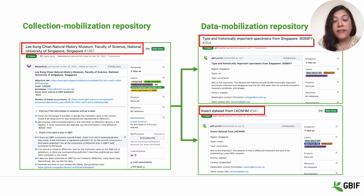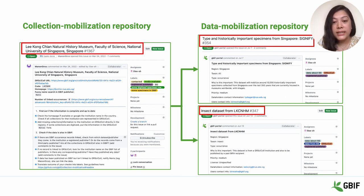From their web page, I also learned that they have an ongoing digitization project called Specify, and one of the objectives of that project is to make the digitized data openly available. Therefore, I contacted them to know about their interest in publishing the project data or any other collection data. Based on their response and interest, I added two of their datasets in the data mobilization repository using the 'suggest a new dataset' tool. These datasets are now being prepared and will hopefully soon be published.